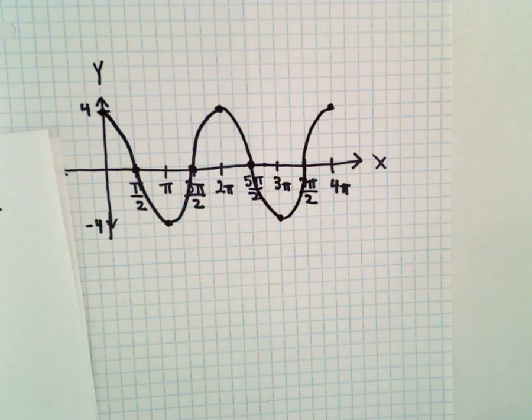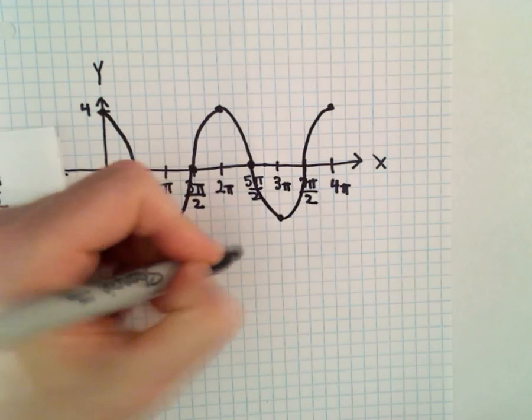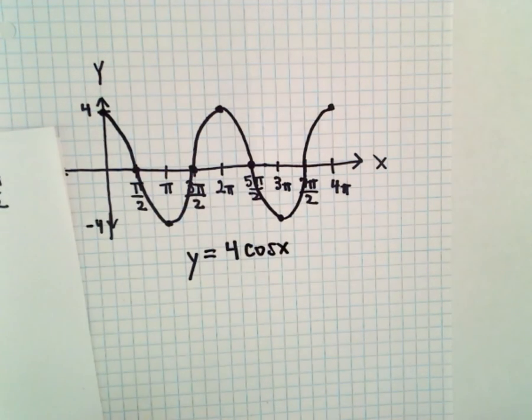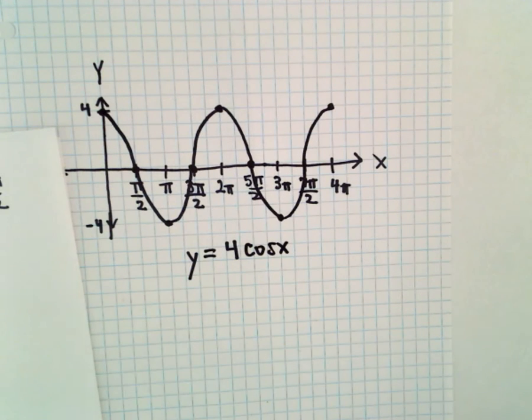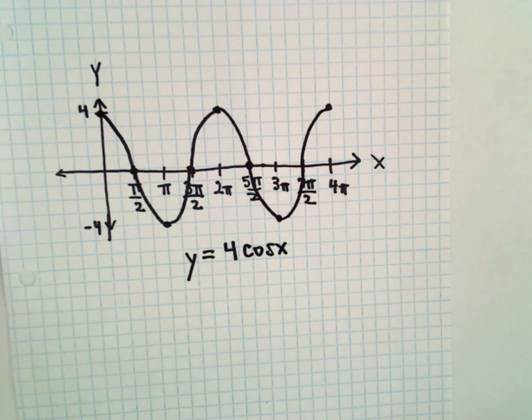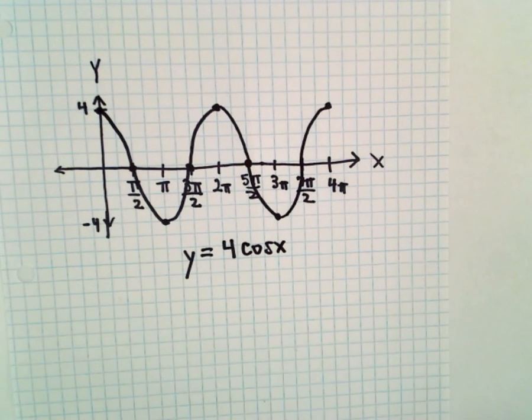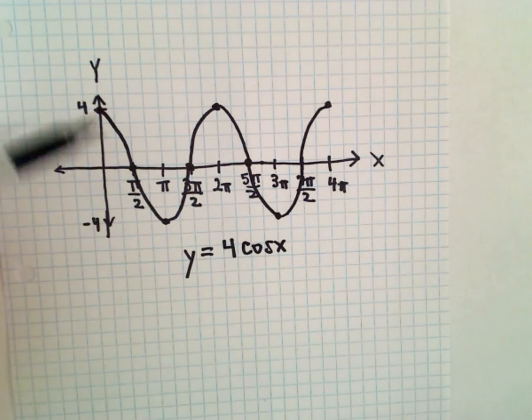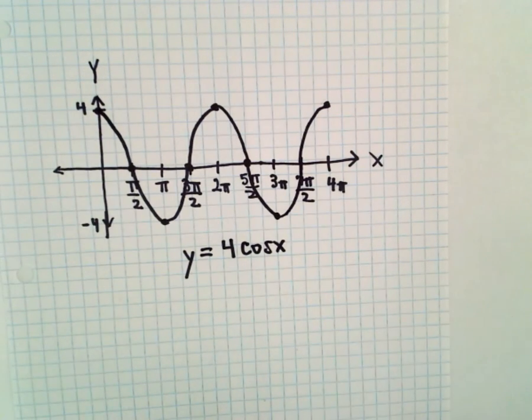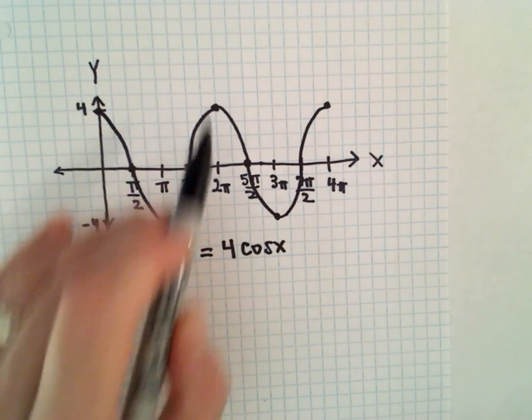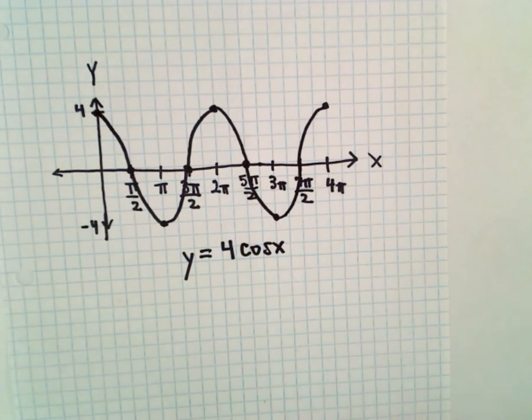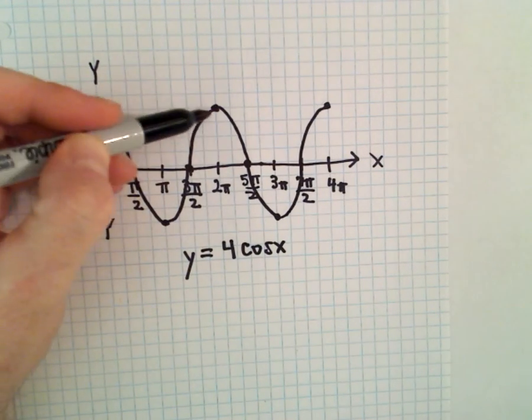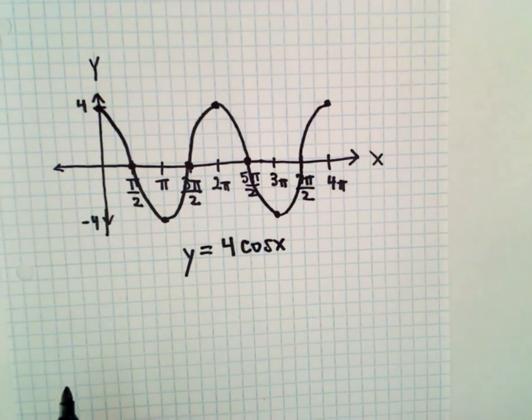So that would be two periods of y equals four times cosine x. You can always plot points, do other things to make sure that the graph is exactly what you want. But for sine and cosine, I take the period, divide it into four, that's what I use as my increments, and then I just start putting some points down and connecting them with those curvy cosine lines.